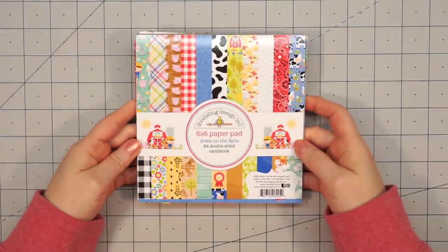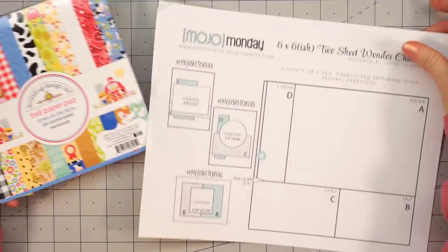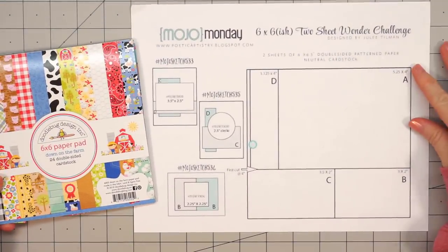Hello friends, it's Kristi Marcotte. I recently used Mojo Monday's 6x6 Two Sheet Wonder Challenge and it was so much fun I decided to use it again.